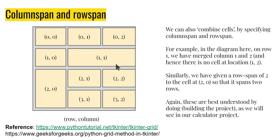Now, why is the column span 2 here? Well, because the width of the cell spans two columns. Likewise, I can create a row span 2, in which case I get two rows as the height of this cell. Again, this is best understood by doing, which is what we are going to do in our calculator project.